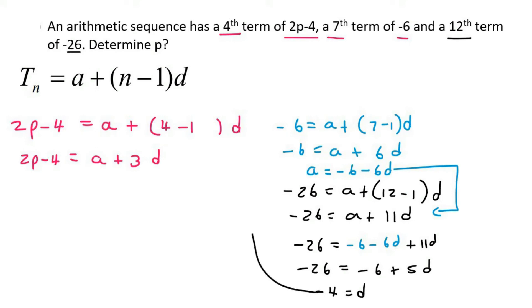So we can plug that d value back into here to find a. And so a is going to be minus 6 minus 6 multiplied by negative 4. And so a would eventually equal 18.